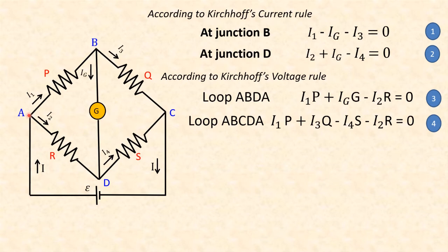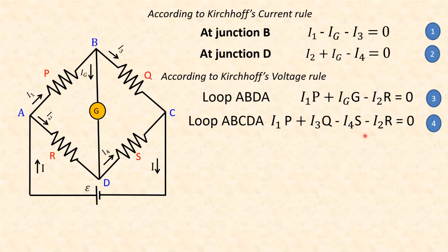For loop A, B, C, D, A, the voltage rule gives: I1P plus I3Q minus I4S minus I2R, taking the current to be flowing in the clockwise direction, equals 0.